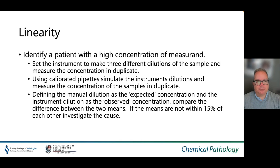The procedure for linearity testing is as follows: identify a patient with a high concentration of the measurand, set the instrument to make three different dilutions of the sample and measure the concentration in duplicate for those three diluted points. Using calibrator pipettes, simulate the instrument's dilutions and measure the concentration of the samples in duplicate. Defining the manual dilution as the expected concentration and the instrument dilution as the observed concentration, compare the difference between the two means. If the means are not within 15% of each other, investigate the cause.